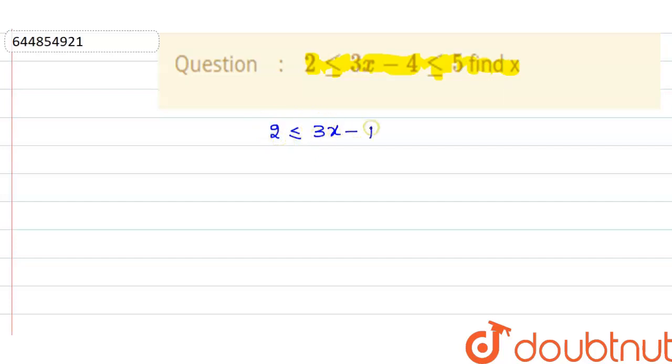What you do is just add 4 to all sides. So this is 2 plus 4 less than equal to 3x minus 4 plus 4, and less than equal to 5 plus 4.